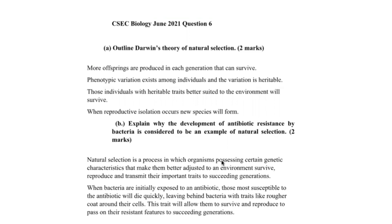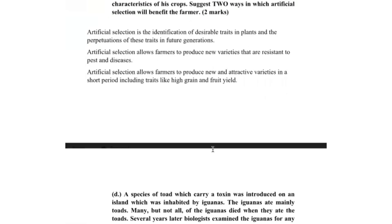Now, how does the development of antibiotic resistance by bacteria serve as an example of this process? When an antibiotic drug is introduced to a population of bacteria, those most susceptible to the antibiotic will die quickly. However, those less susceptible and can adapt to the antibiotic conditions will survive, reproduce, and pass on survivable traits like rough coats around their cells to the successive generations. So, this is a prime example of natural selection.